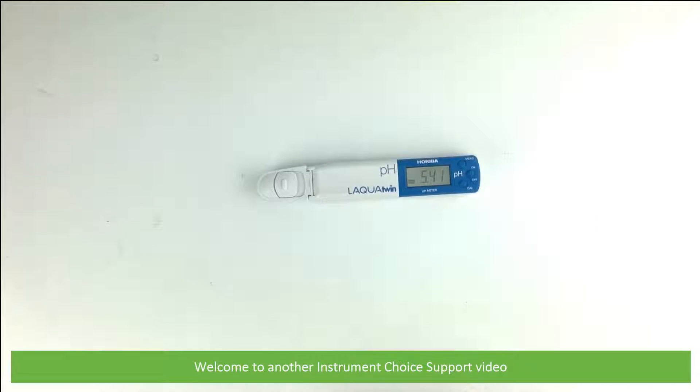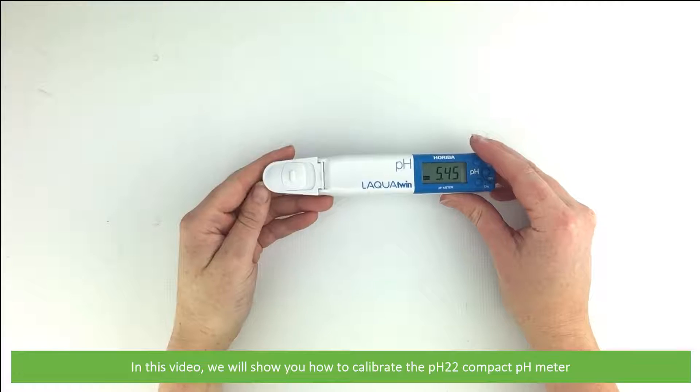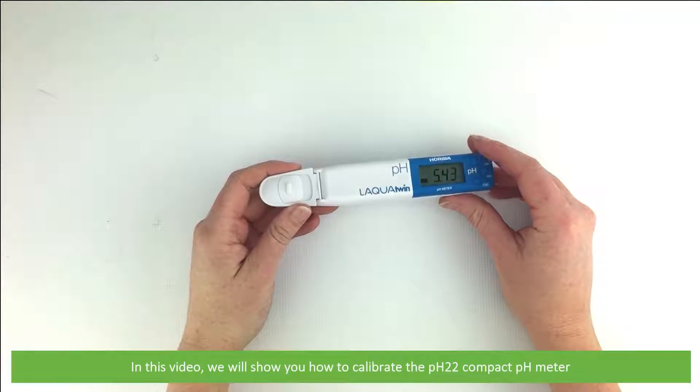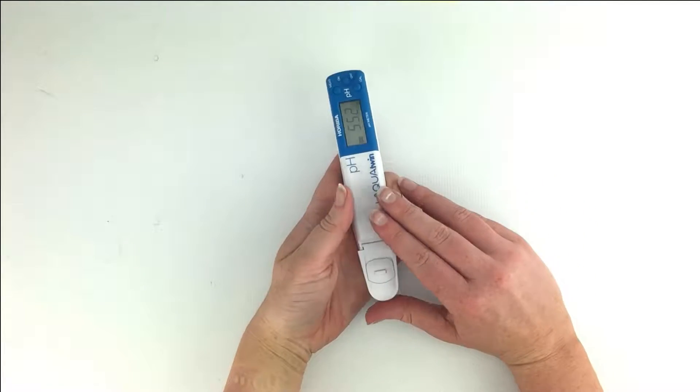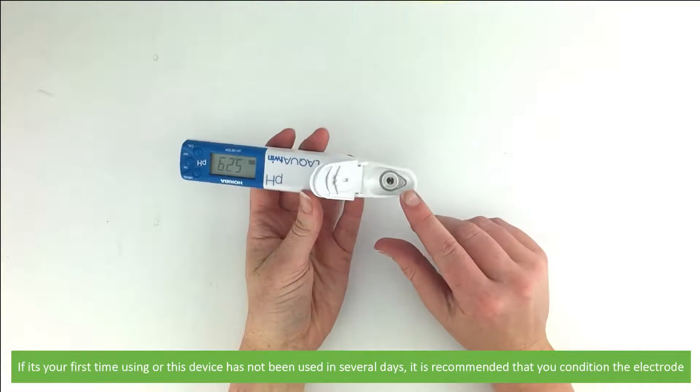Hi and welcome to another Instrument Choice support video. In this video we will show you how to calibrate the pH 22 compact pH meter. If it's your first time using it or this device has not been used in several days, it's recommended that you condition the electrode.